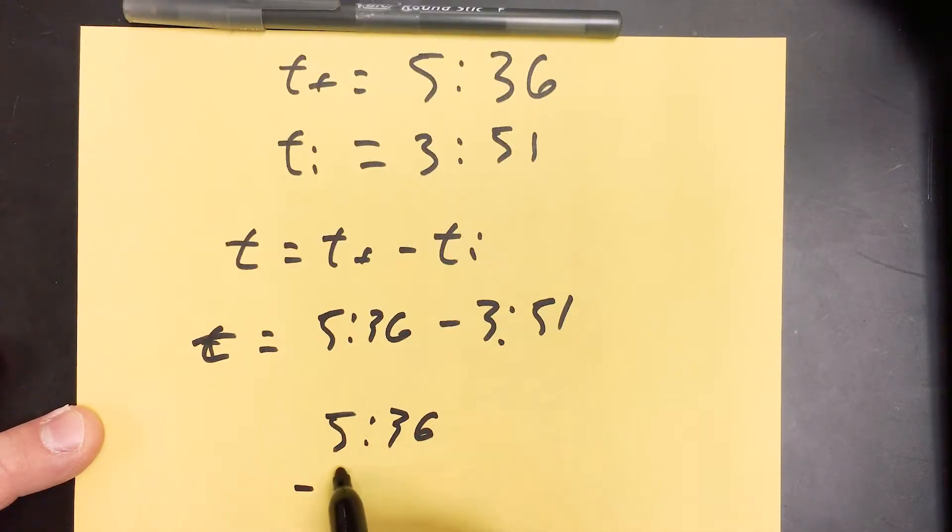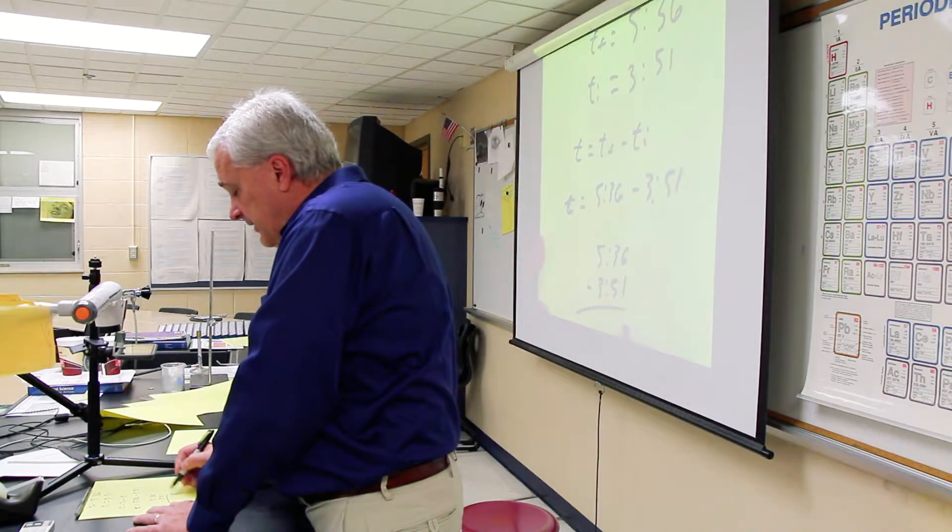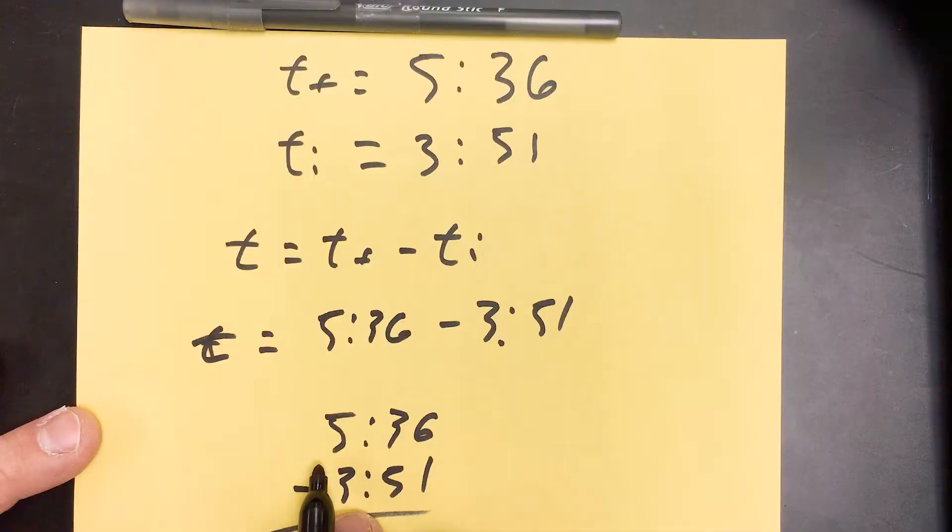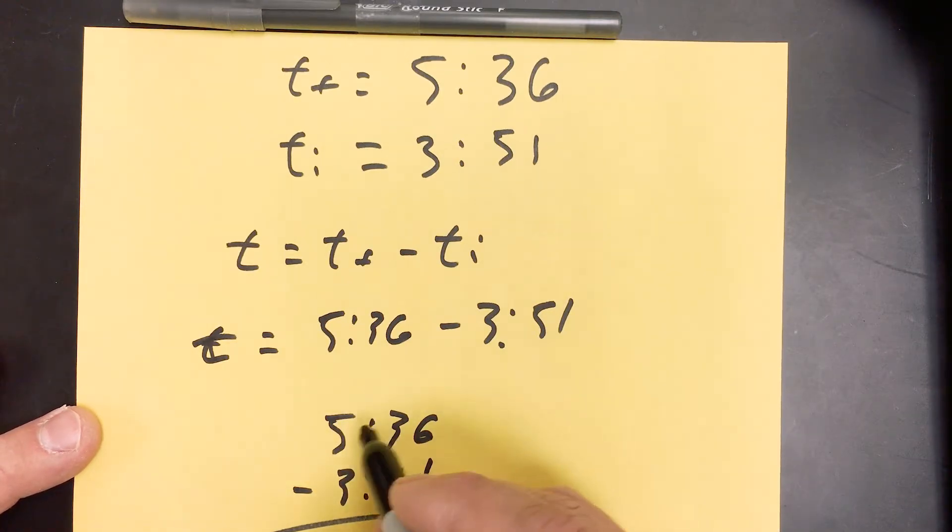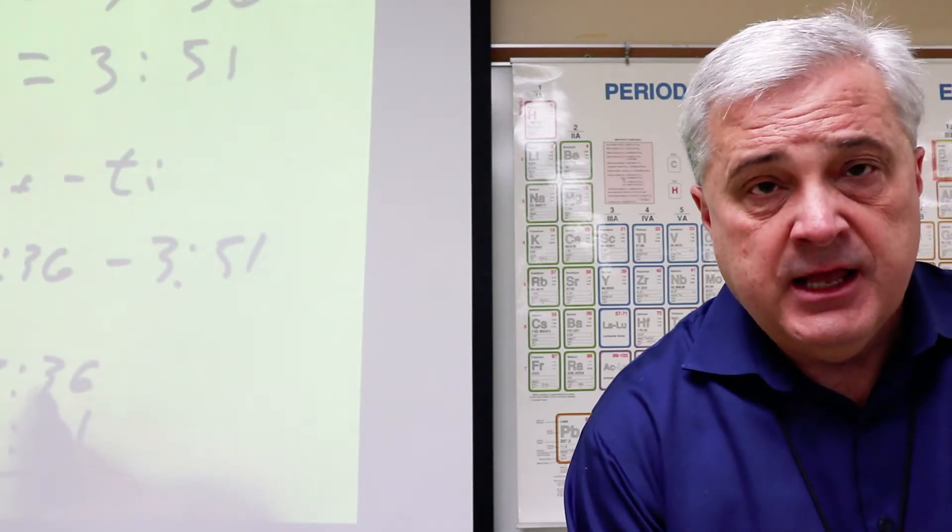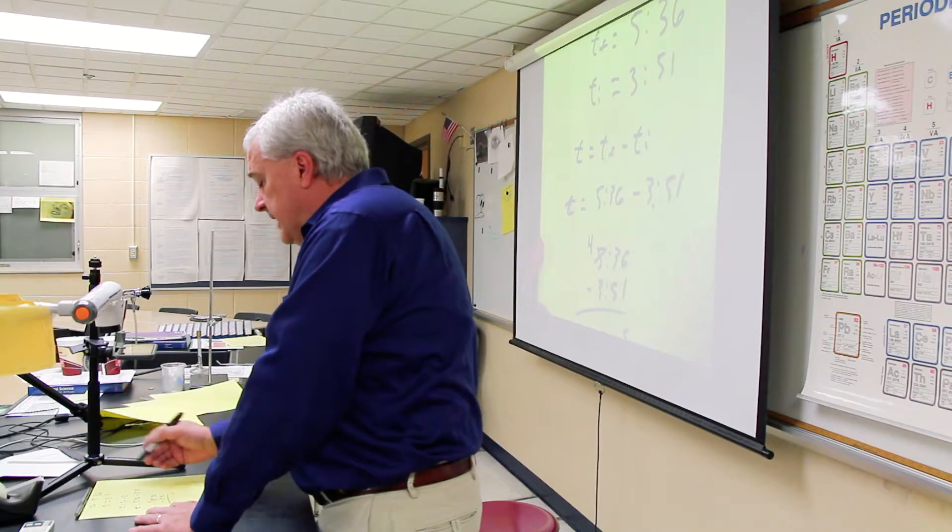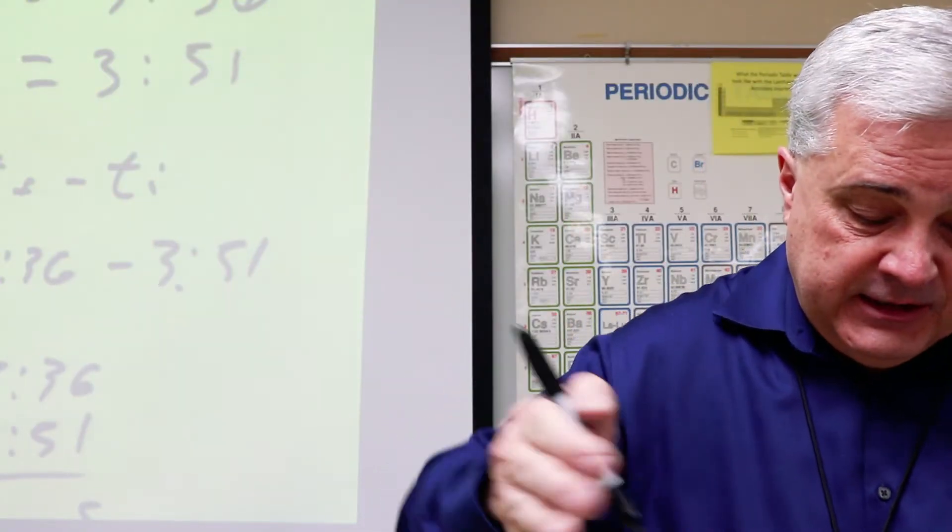5:36 minus 3:51. 6 minus 1 is 5. Now I've got to borrow across the 5. So the 5 becomes a 4. And 6 comes across and adds to the 3. The 6 is going to add to the 3. Now, when we borrow decimals, we bring 10 across. That means we stick a 1 out in front of whatever the thing is.